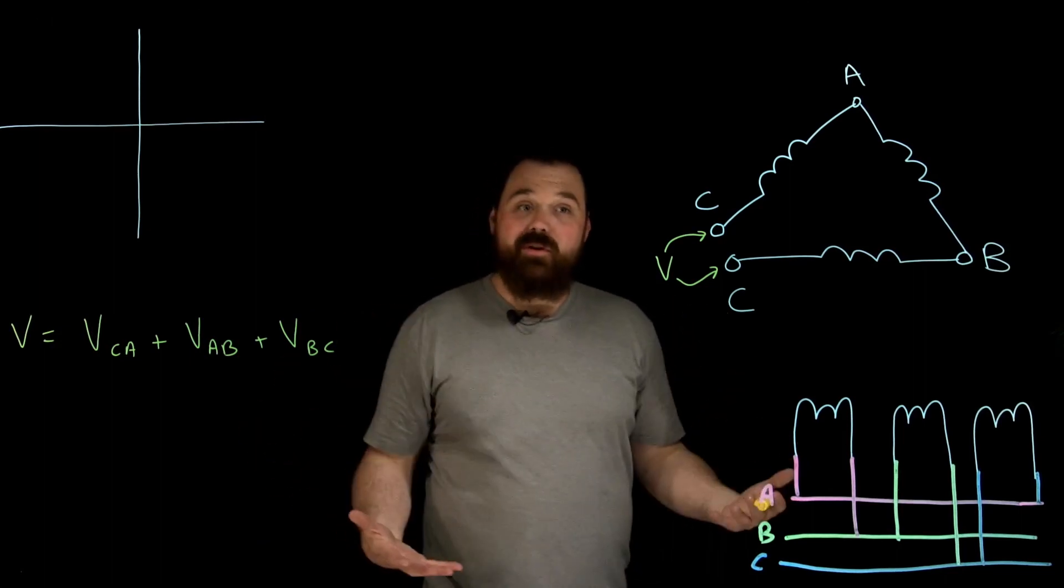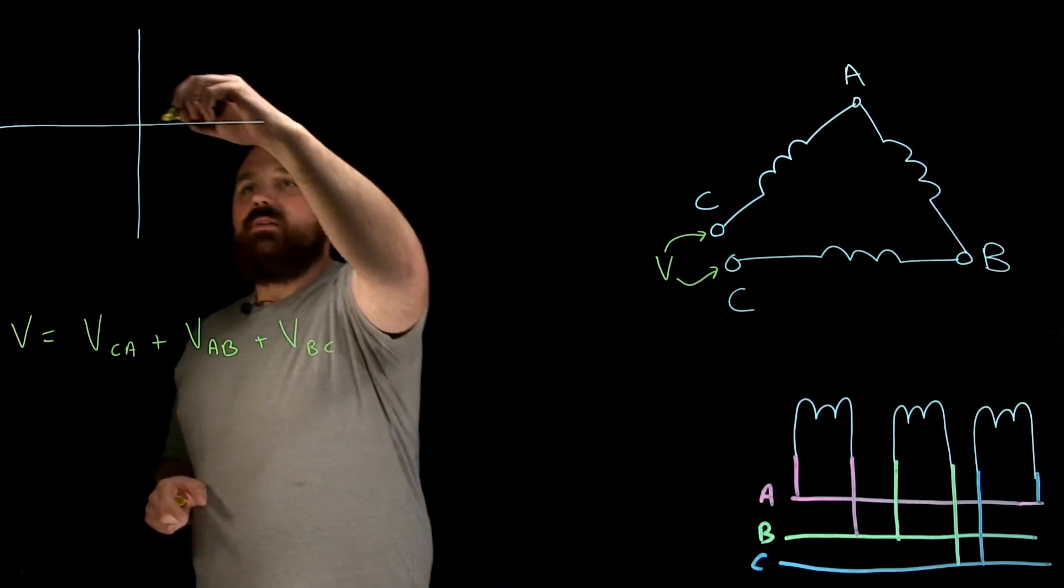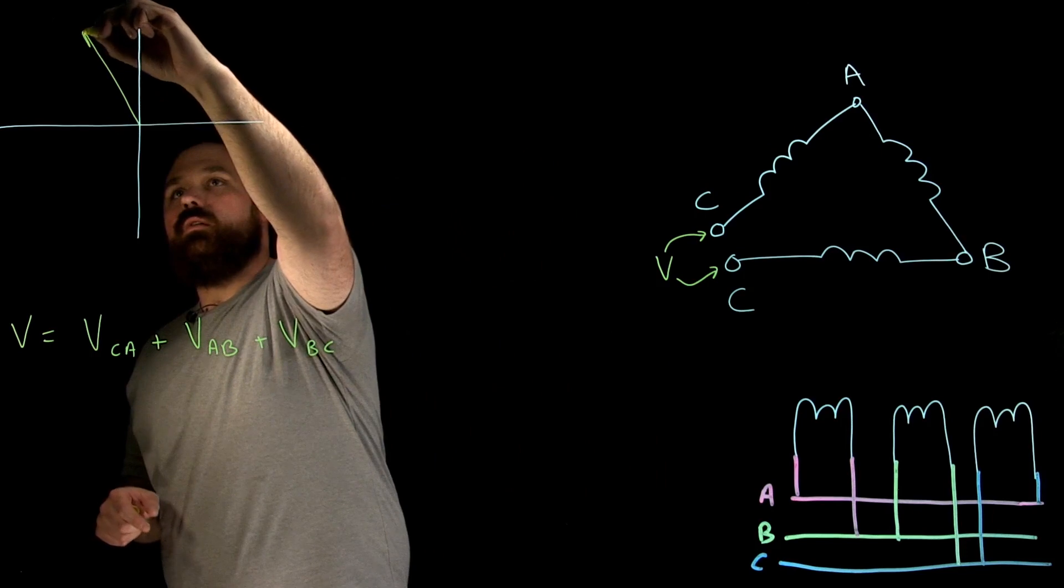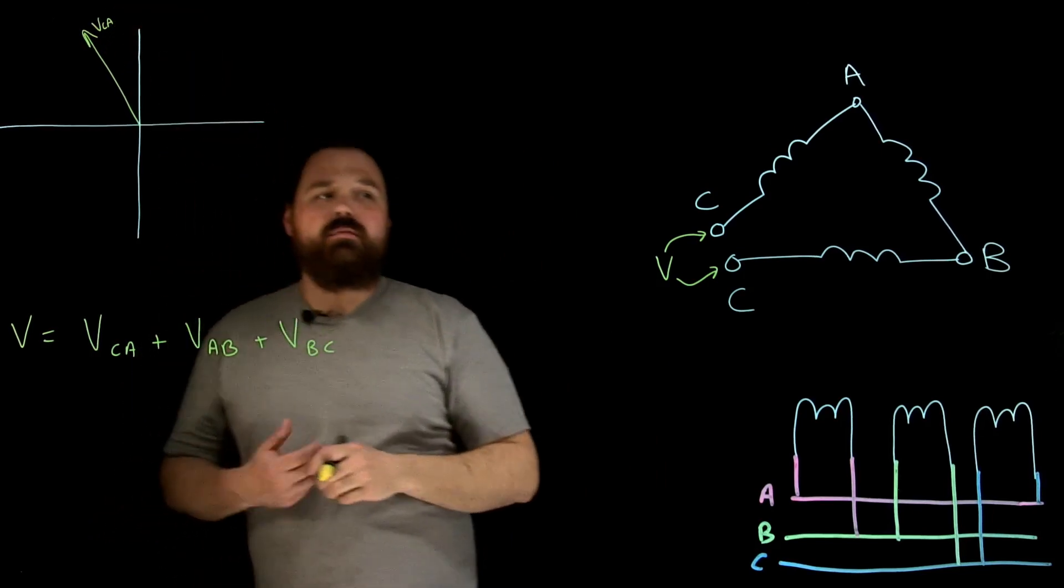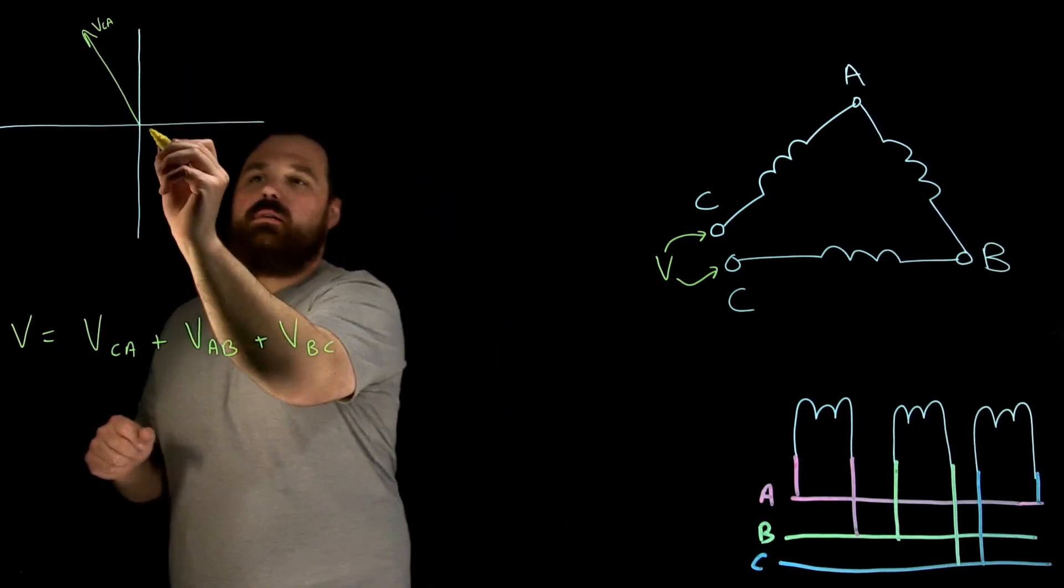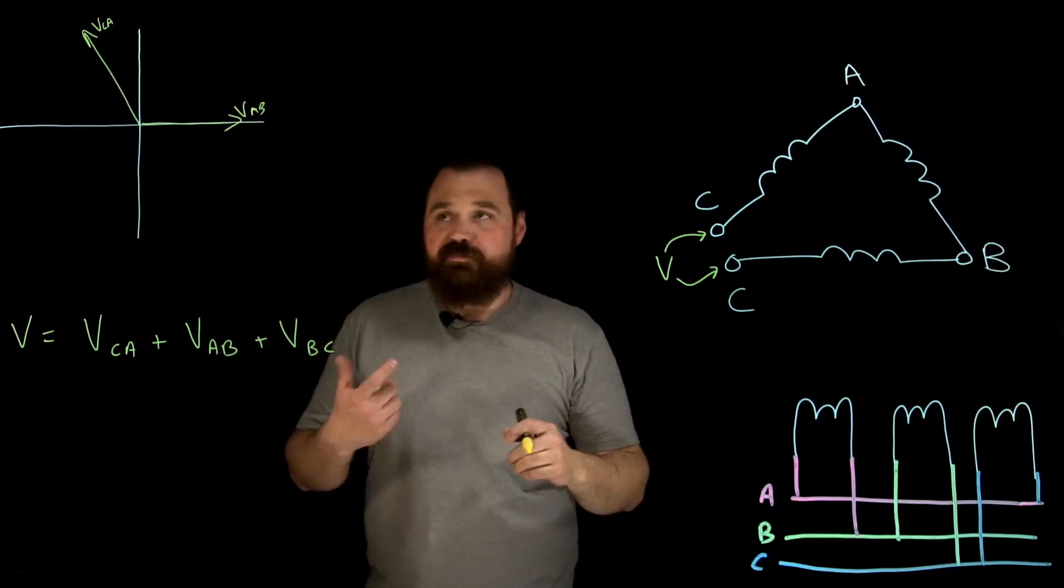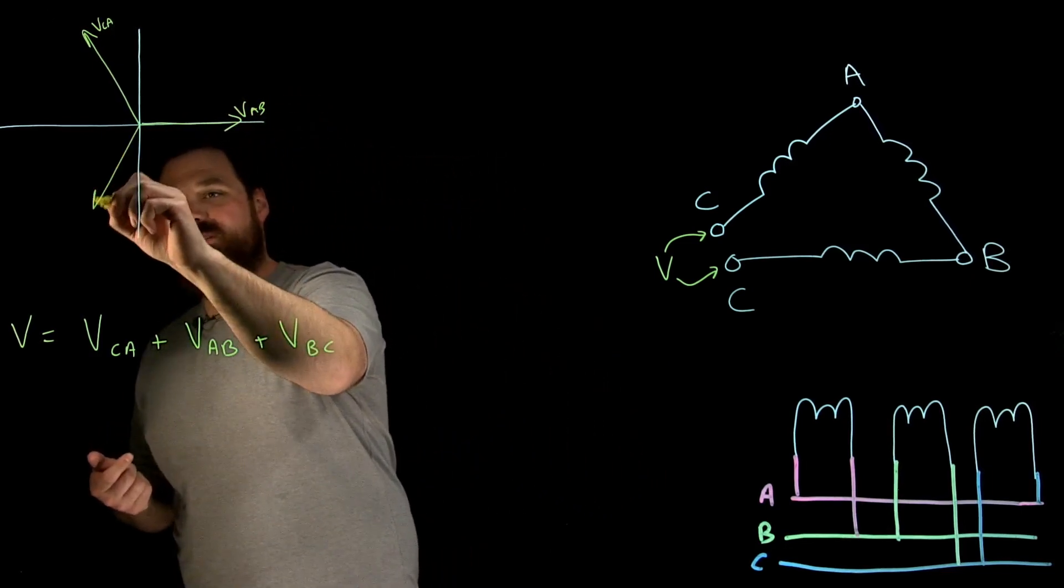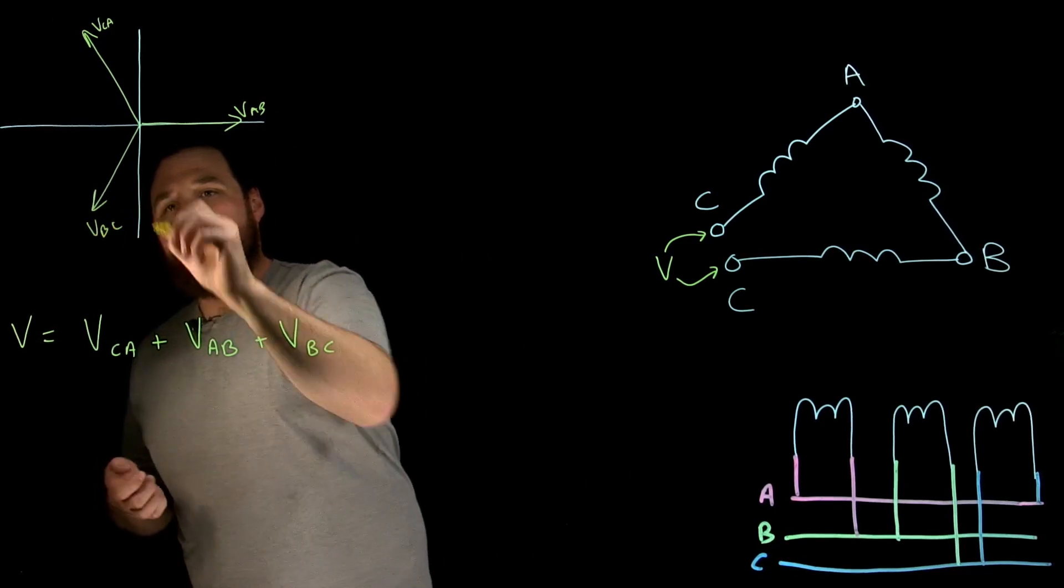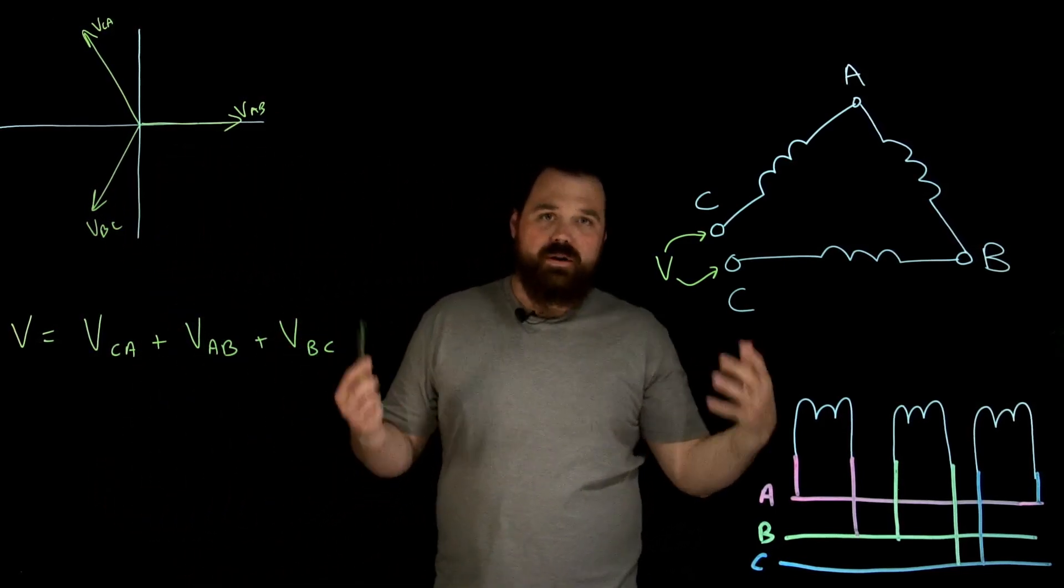Now we know in a properly connected circuit, V C to A would be up here at 120, V A to B would be here at 0, V B to C would be here at 240 degrees.